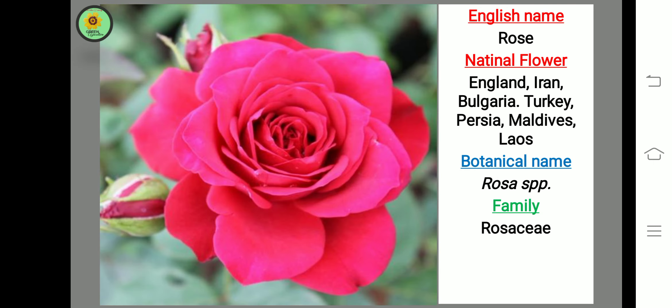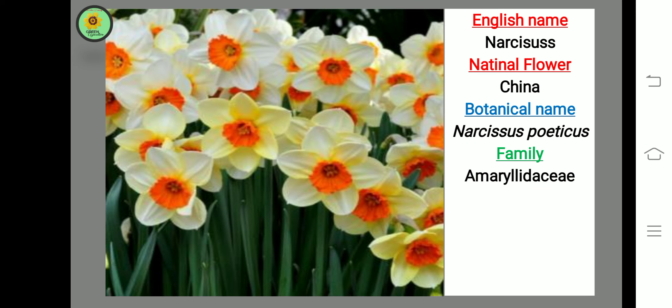Next flower is Rose, botanical name Rosa species, family Rosaceae, national flower of England, Iran, Bulgaria, Turkey, Persia, Laos, and Maldives. Next flower is Narcissus, national flower of China, botanical name Narcissus poeticus, family Amaryllidaceae.